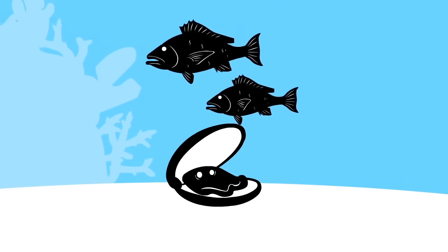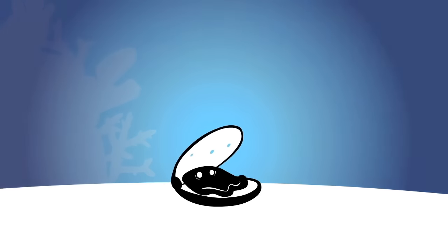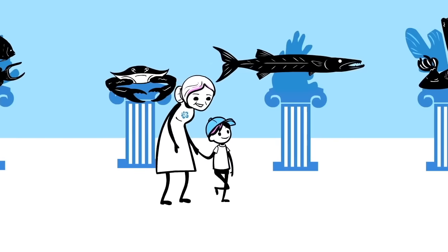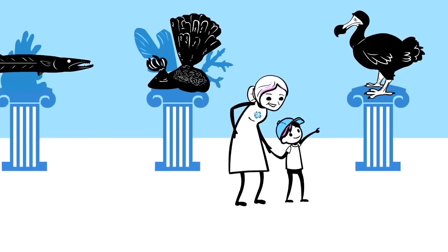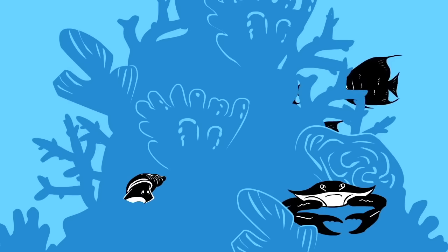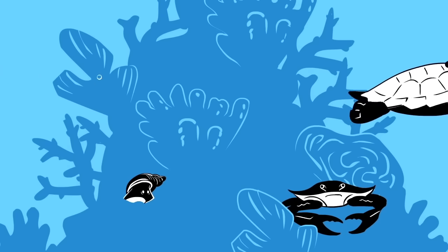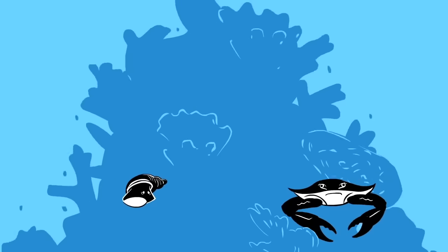We could change the ocean's chemistry so much that shells actually start to dissolve. That means if we don't turn this problem around, your great-grandkids might think of reefs the way you think of a dodo bird. And with one in four ocean species living in coral reef ecosystems, weaker coral could threaten the foundation of the whole ocean food chain.